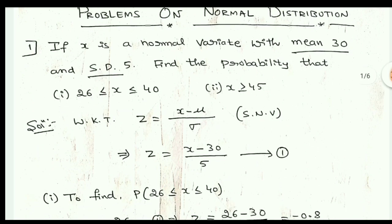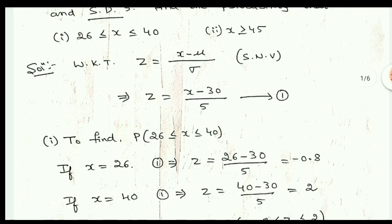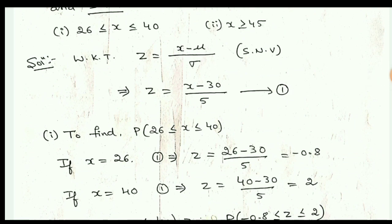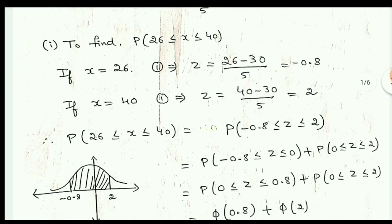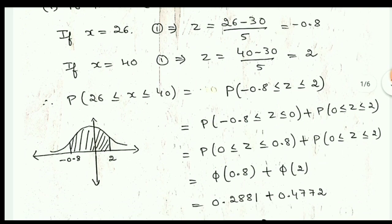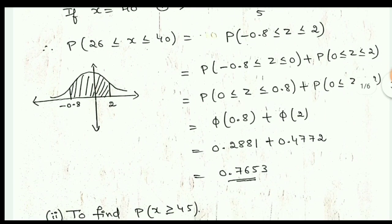The first part asks for x lying between 26 and 40. Substitute x = 26 (lower limit) into equation 1: z = (26 − 30) / 5 = −0.8. Substitute x = 40 (upper limit): z = (40 − 30) / 5 = 2. Therefore, P(26 ≤ x ≤ 40) is equivalent to P(−0.8 ≤ z ≤ 2) in terms of standard normal distribution.